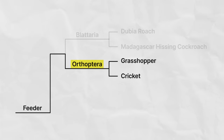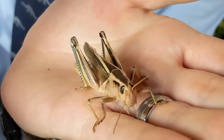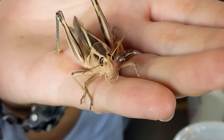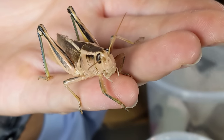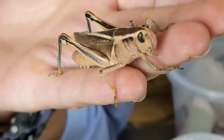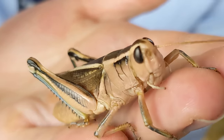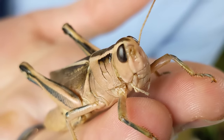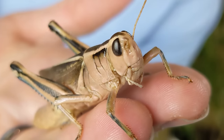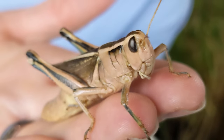The orthopterans are the guys with big hopper legs. This is a grasshopper — odds are you've encountered them in your life. I think grasshoppers are a fantastic feeder; in some places they're very common as feeders, but I've never lived in one of those places. Like dubias, they come in a range of sizes, but unlike dubias they do not generally bury themselves — grasshoppers are jumpers, not hiders.